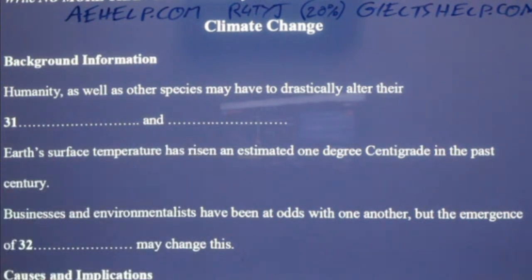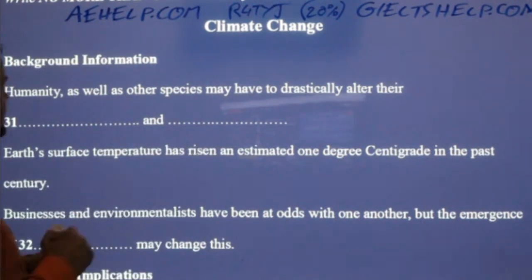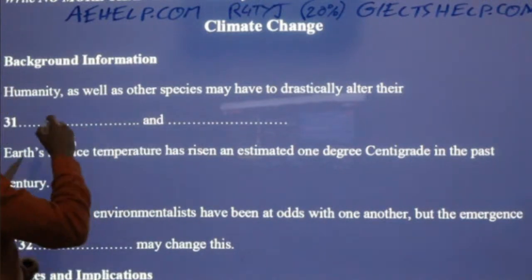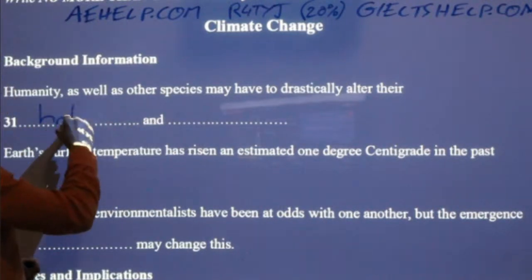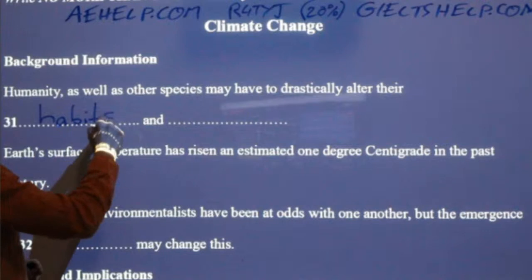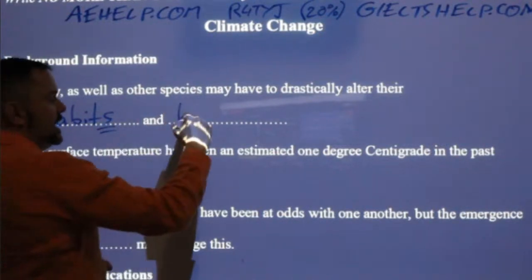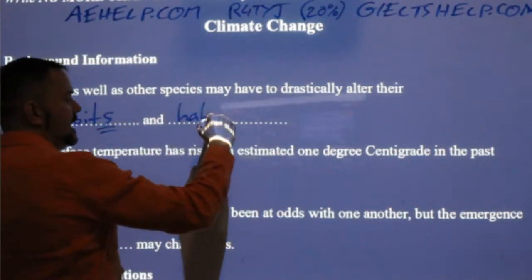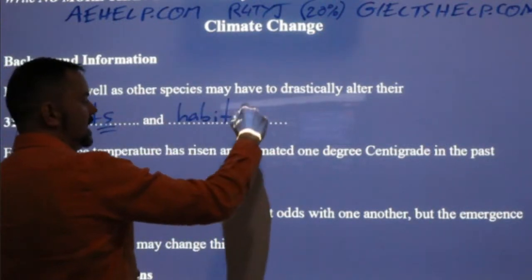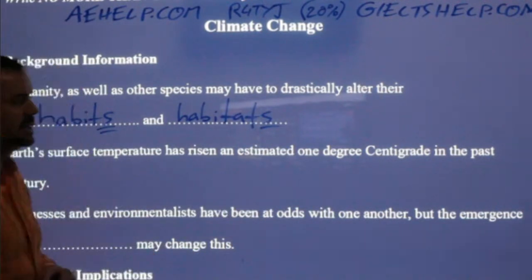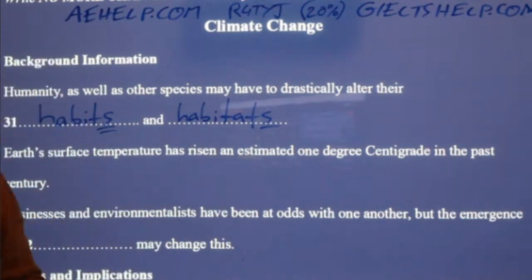Moria says it's 'habits, habitats.' You don't need the word 'and' because it's in your question sheet. So just 'habits' — plural, the S is important — and 'habitats.' Habits and habitats. Well done, Rashika. Our behavior and where we live — but you should keep what you hear in the audio.